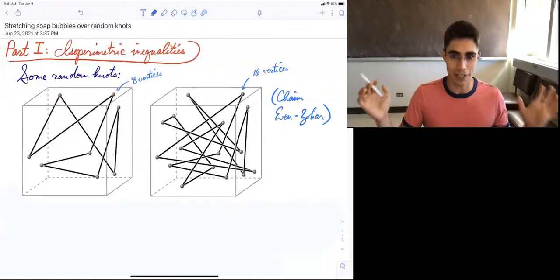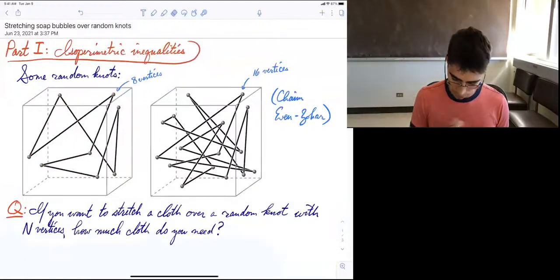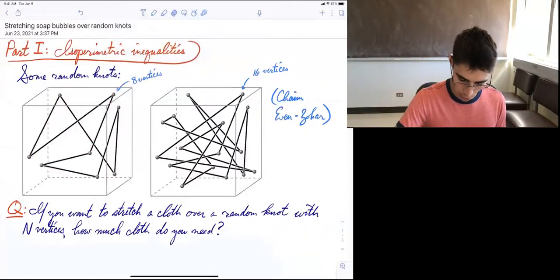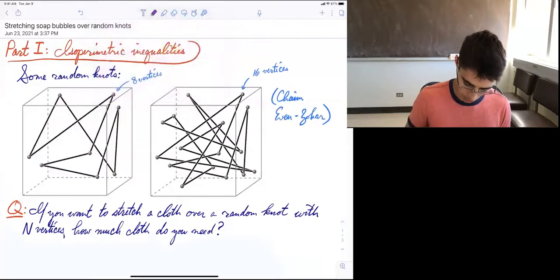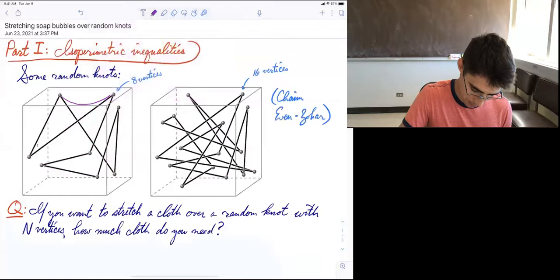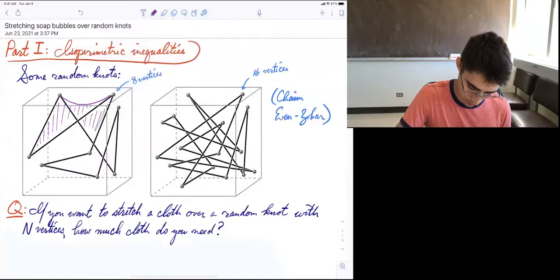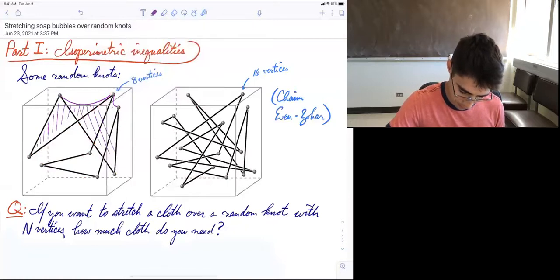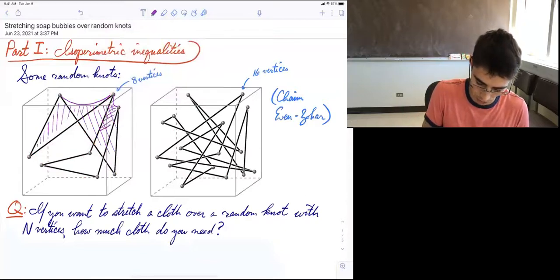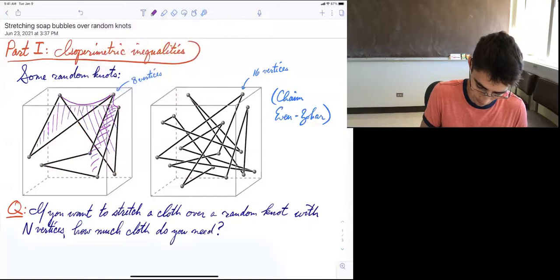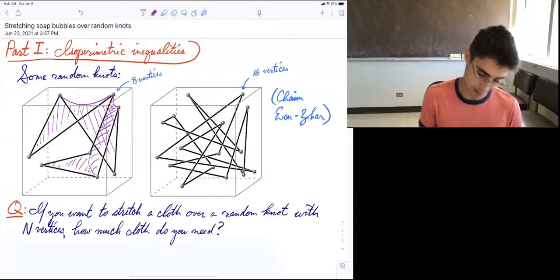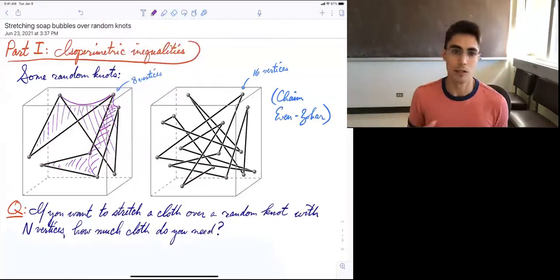These are the objects that I'm going to be working with. And the question I want to ask is something like this: If you want to stretch a cloth over this random knot, what is that cloth going to look like? Maybe you stretch it over this triangle, and then you stretch it over this other triangle in the back. And then it also goes over this little thing in the front.